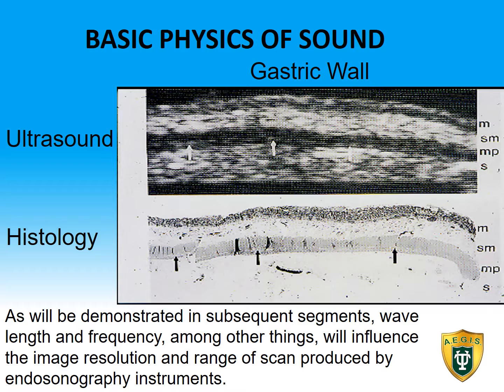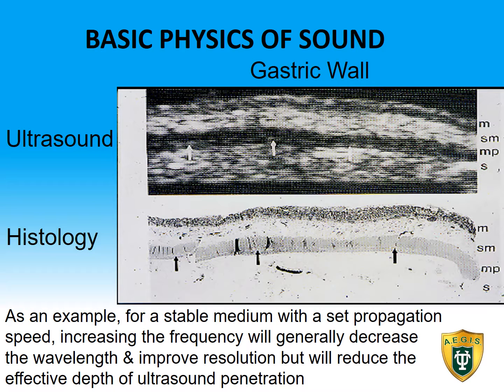As will be demonstrated in subsequent segments, wavelength and frequency, among other things, will influence the image resolution and range of scan produced by endosonography instruments. As an example, for a stable medium with a set propagation speed, increasing the frequency will generally decrease the wavelength and improve resolution, but will reduce the effective depth of ultrasound penetration.